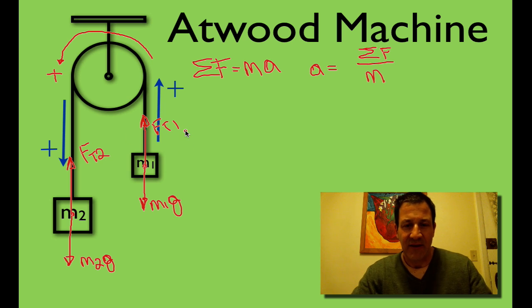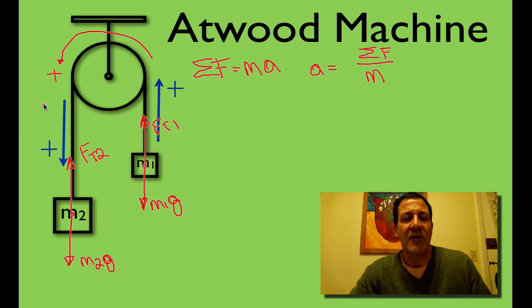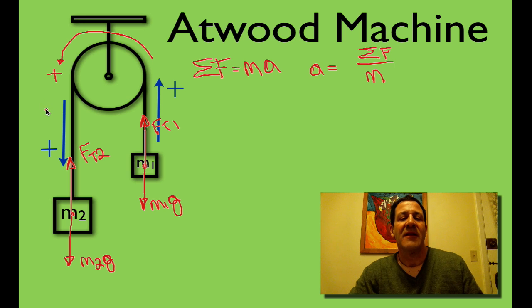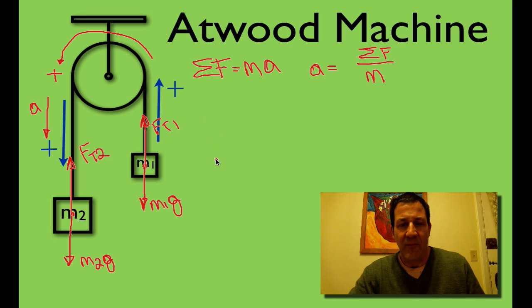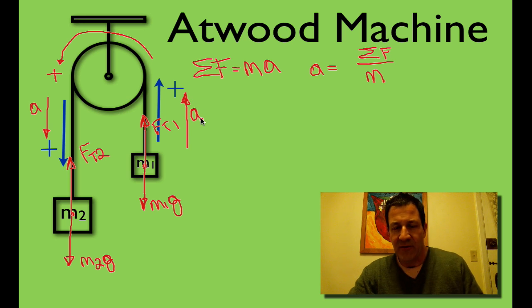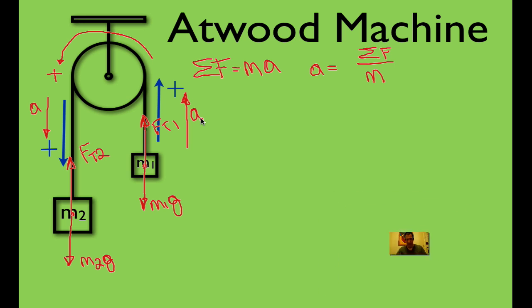We should draw in the acceleration vectors. M2 moves downwards and is speeding up, so its acceleration vector points down. M1 is moving upwards and speeding up, so its acceleration vector points upwards. It's not A1 and A2 because they have the same acceleration — it's just A. We have the rotation direction, the forces, the sign conventions, and the acceleration vectors all laid out. Now we can add up the forces and calculate the acceleration.